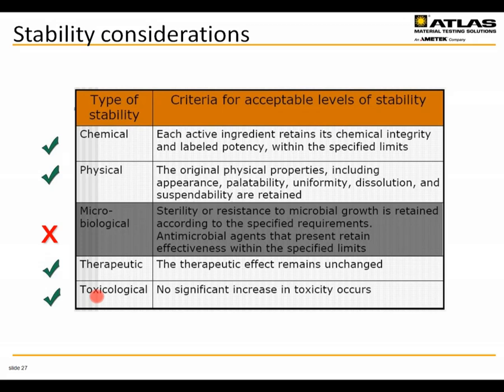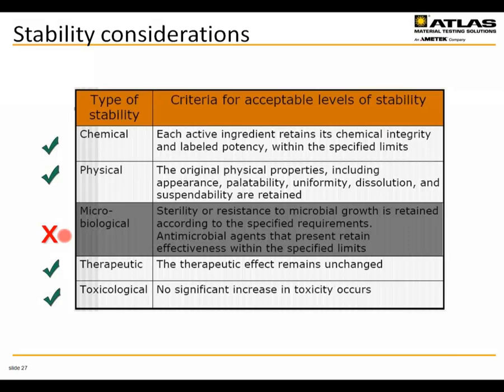When talking about stability considerations, there are several we need to assess: chemical stability — does the active ingredient retain its integrity and label potency; physical parameters including appearance, palatability, dissolution, and suspendability; therapeutic concerns that remain unchanged; toxicological concerns that there is no increase in toxicity; and microbiological considerations. Of all of these, only the microbiological is essentially not affected by light. So besides looking at chemical potency in photostability testing, we also need to be concerned about all these other aspects as well.